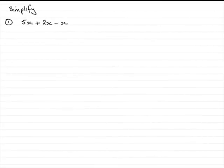Hi, welcome to this tutorial on simplifying expressions. Now, in an expression like this, you've got what we call three terms. You've got the 5x, you've got the 2x, and you've got the minus x. Three terms, and they're all the same kind of term, so you can actually simplify this.